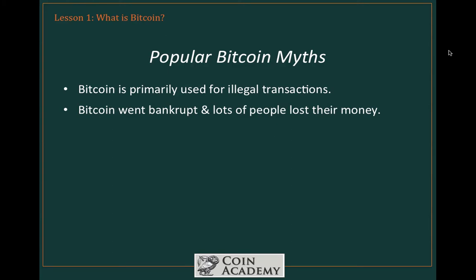Next myth: Bitcoin went bankrupt and lots of people lost their money. This is confusion about the Mt. Gox incident. Mt. Gox was a currency exchange based in Japan — at the time, the largest Bitcoin exchange in the world. There was a theft at Mt. Gox, Bitcoins were lost, and as a result Mt. Gox went bankrupt, causing further loss. People confuse Mt. Gox and Bitcoin as interchangeable, but they aren't. Mt. Gox is like a bank — if a bank was robbed and went bankrupt, we wouldn't blame it on the U.S. dollar. You shouldn't blame the Mt. Gox situation on Bitcoin.